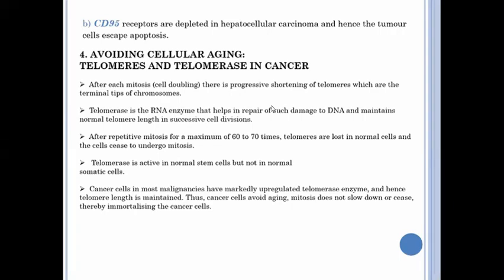The telomerase is active in normal stem cells but not in normal somatic cells. The cancer cells in most malignancies have a markedly upregulated telomerase enzyme, and hence the telomere length is maintained. The cancer cells avoid aging as mitosis does not slow down or cease, thereby immortalizing the cancer cells. So it is one of the important causes of immortalization of the cell or conversion to malignancy of a neoplastic cell.